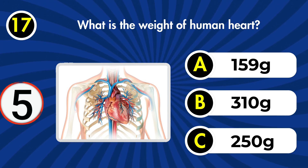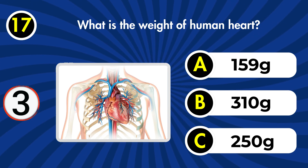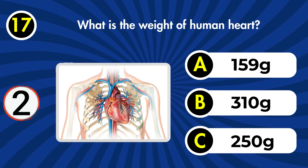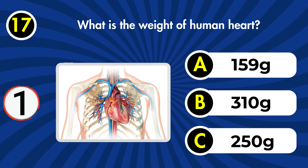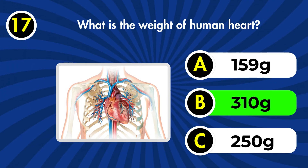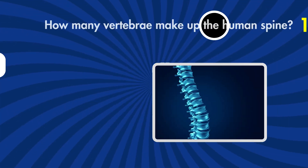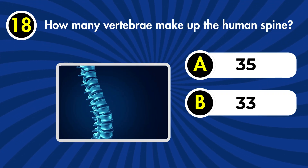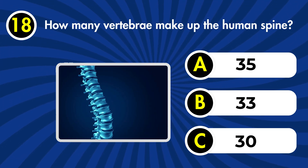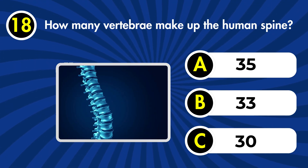Next question: what is the weight of the human heart? a) 159 g, b) 310 g, c) 250 g. Correct answer: b) 310 g.